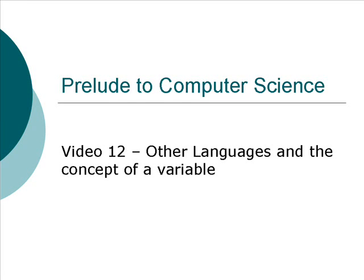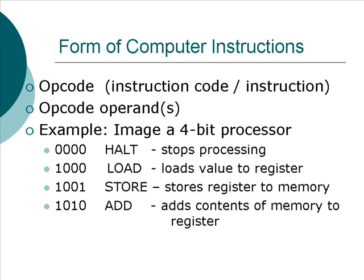Welcome to the Prelude to Computer Science series, video number 12: Other Languages and the Concept of a Variable. Recall that our imaginary processor is a 4-bit processor and it has four instructions. It could have many more than just four instructions. These four instructions are not enough to make it a general purpose computer, but they're enough to write a very trivial, simple program that demonstrates some of the basic ideas of machine language coding.